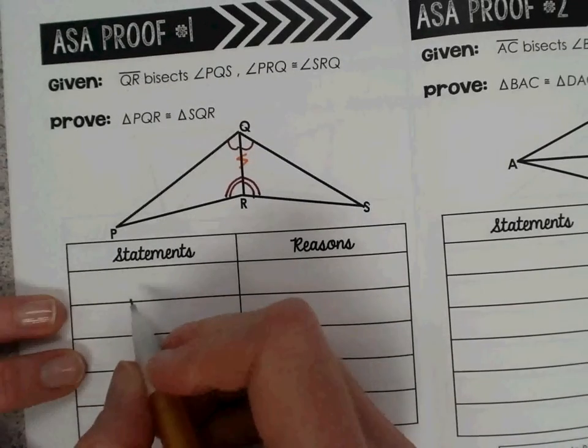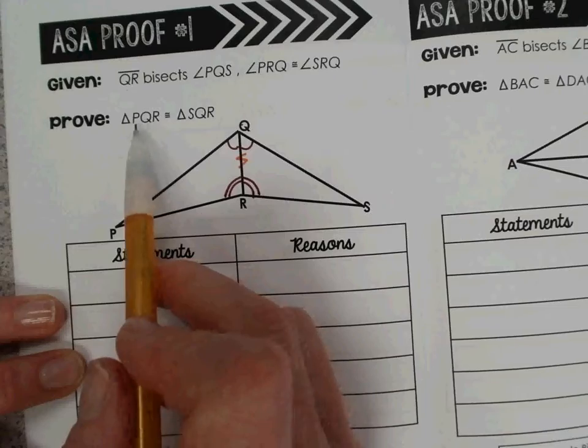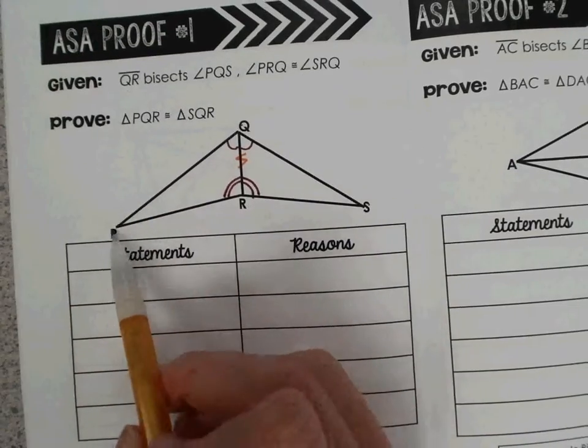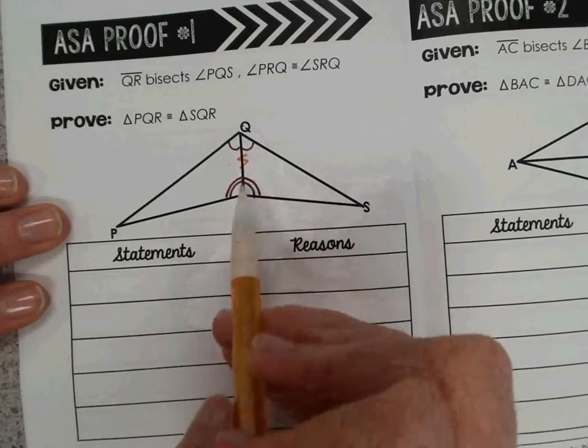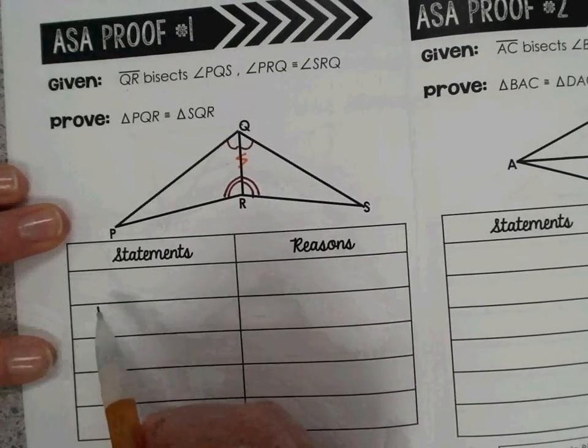Next, we'll take a look at proving that triangle PQR is congruent to triangle SQR. So we'll start with the given information.